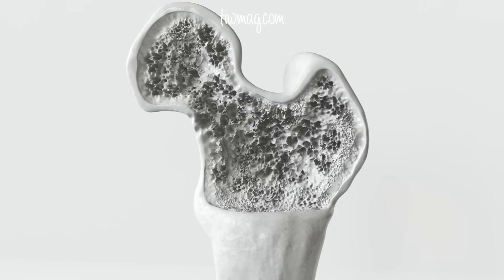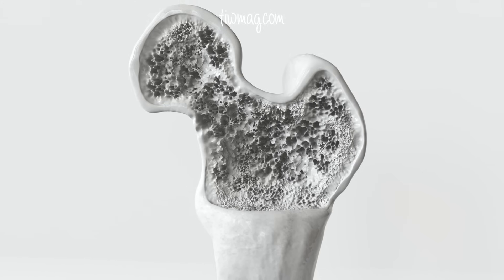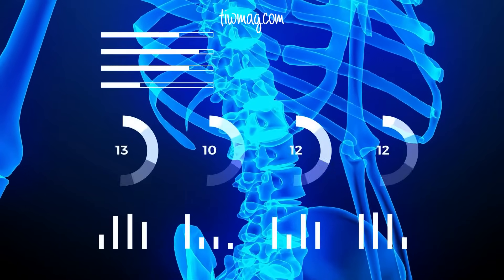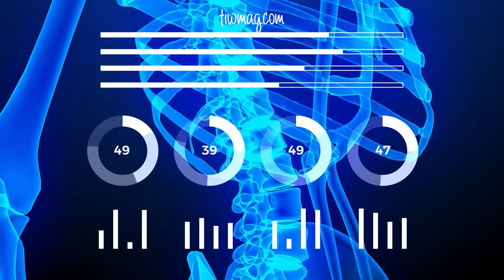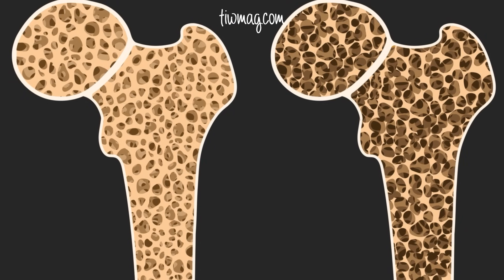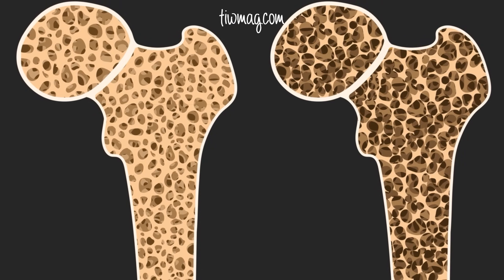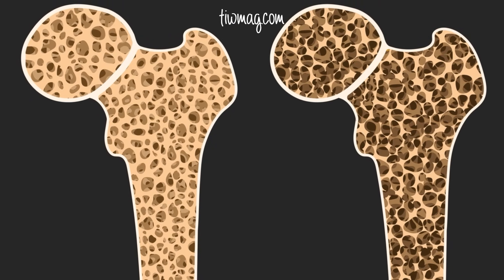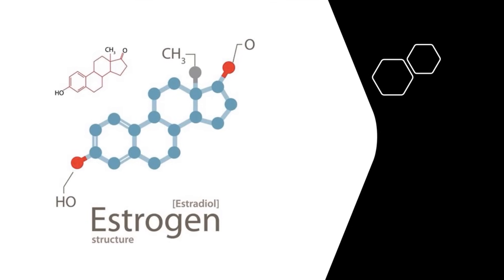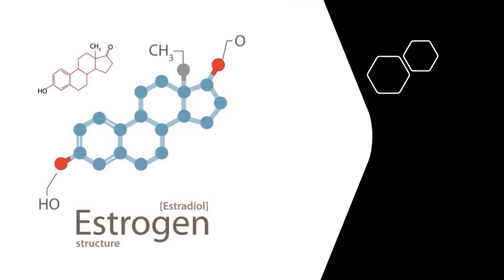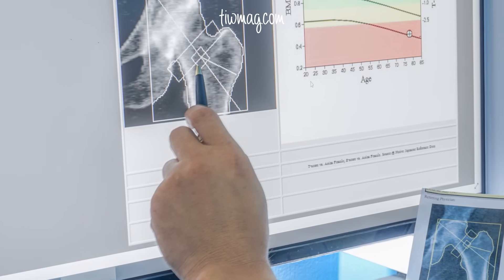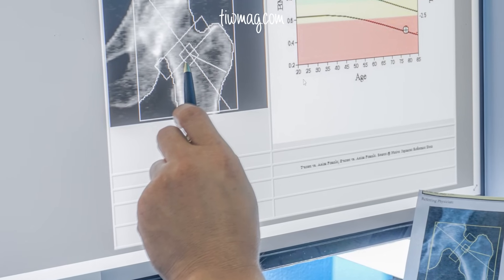In contrast, trabecular bone, found at the ends of long bones and the spinal vertebrae, has a turnover rate of approximately 26% per year, a lower mineral content, and is more metabolically active and responsive to hormonal stimuli — for example, estrogen deficiency after menopause. Trabecular bone undergoes remodeling more than cortical bone. The clinical relevance is that fragility fractures typically occur in trabecular bone.